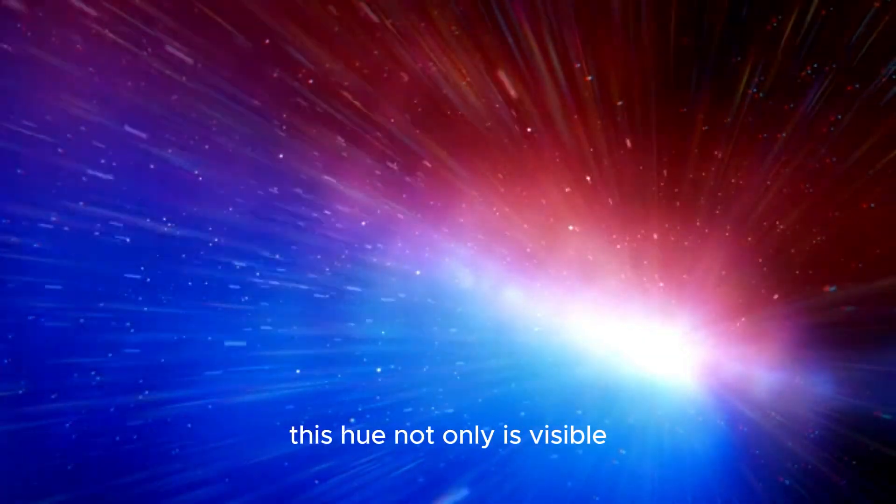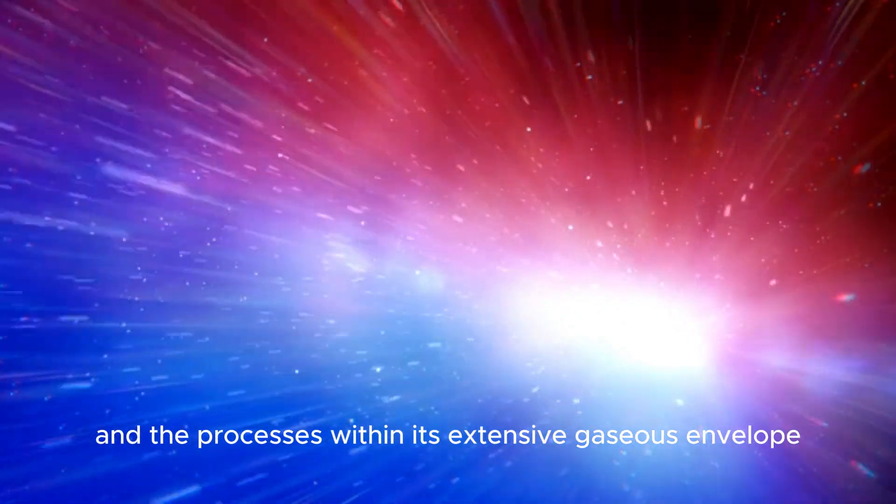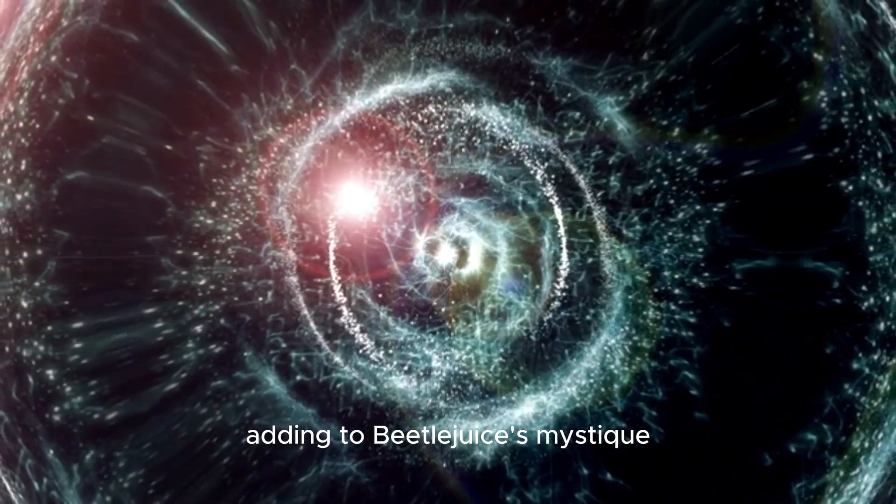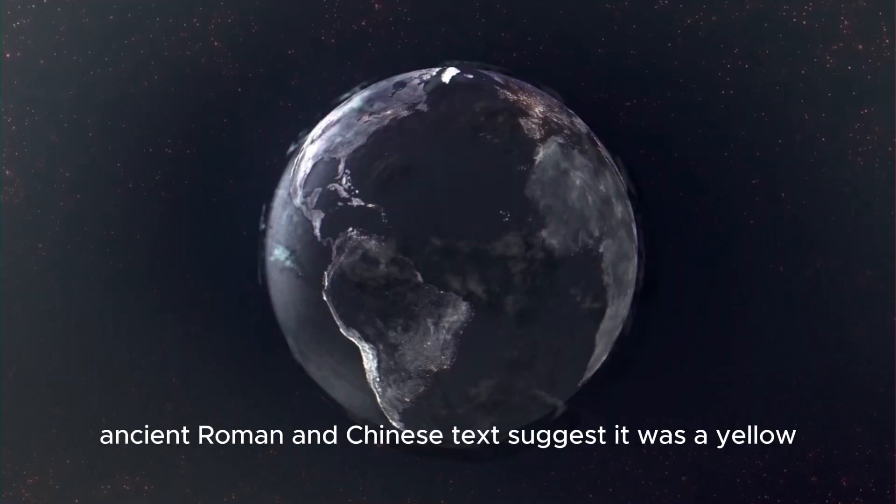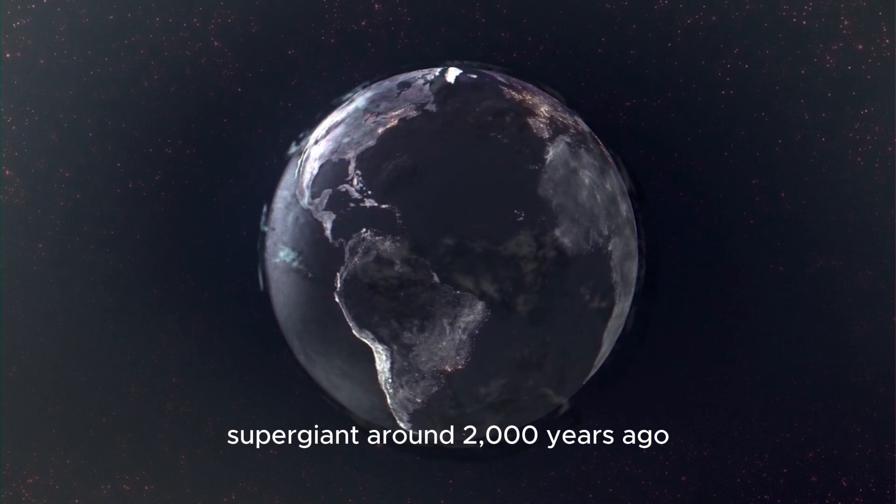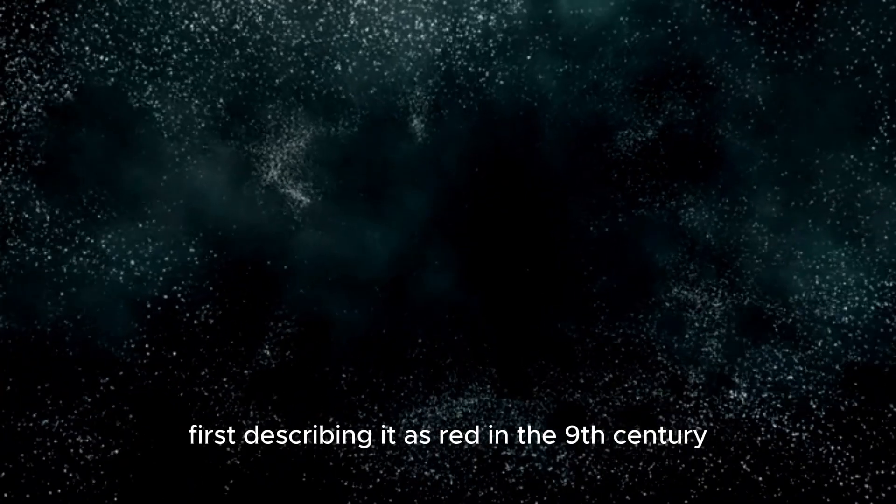This hue not only is visible, but also provides insights into the star's actual state and the processes within its extensive gaseous envelope. Adding to Betelgeuse's mystique is its historical color change. Ancient Roman and Chinese texts suggest it was a yellow supergiant around 2,000 years ago.